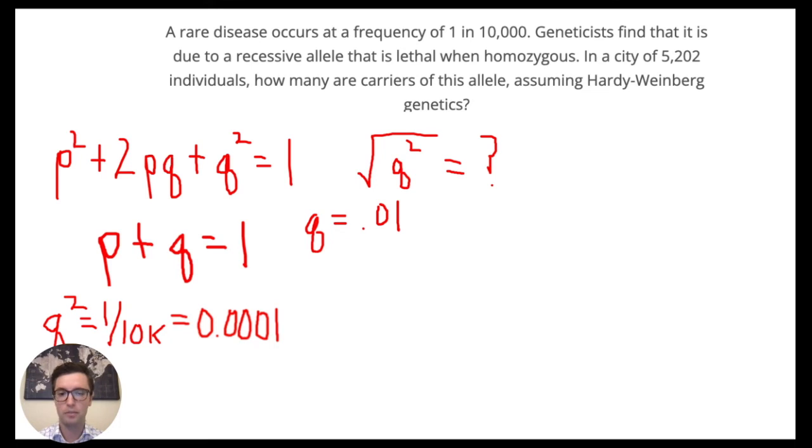Now we've solved for q. Using the second equation here, p + q = 1, we know that p then equals 0.99.